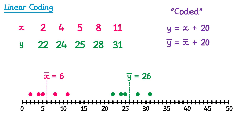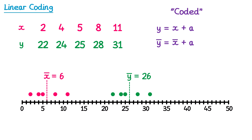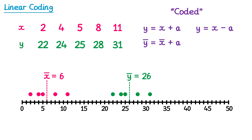So for instance if I'd added 30 when coding the data instead of 20, the new mean y bar would be the old mean x bar plus 30. This also works with subtraction. So if I'd coded the data by subtracting 7 from all of the values, to find the new mean y bar, I subtract 7 from the old mean x bar. More generally, if we code a set of data by adding a value a, the new mean will equal the old mean plus a. And if we code by subtracting a value a, we work out the new mean by subtracting a from the old mean.